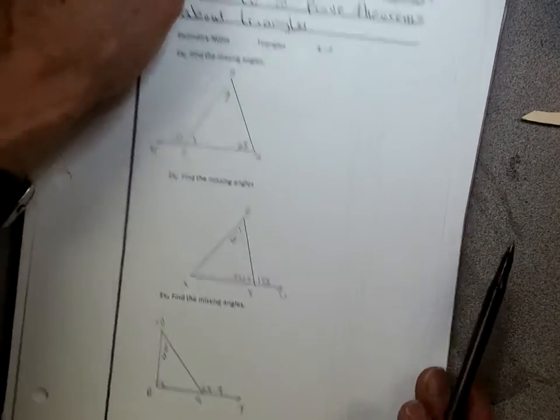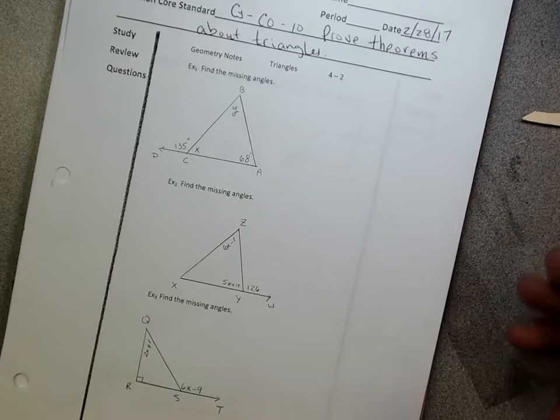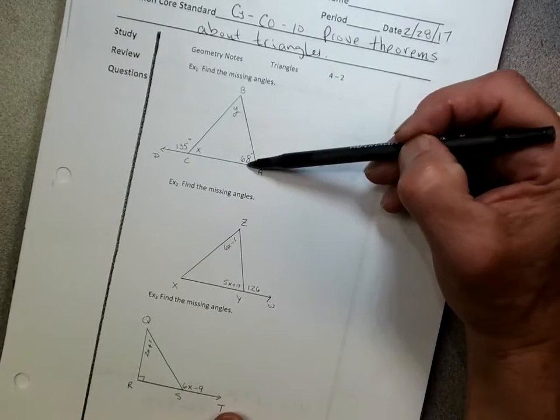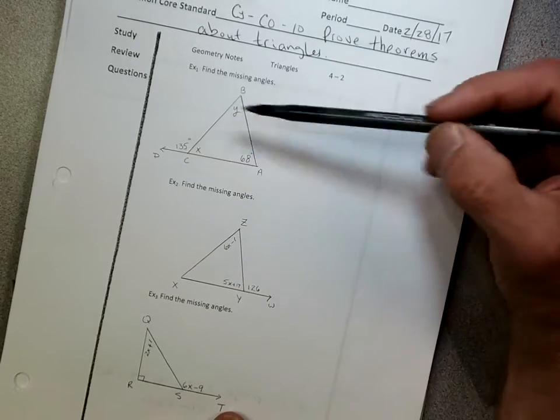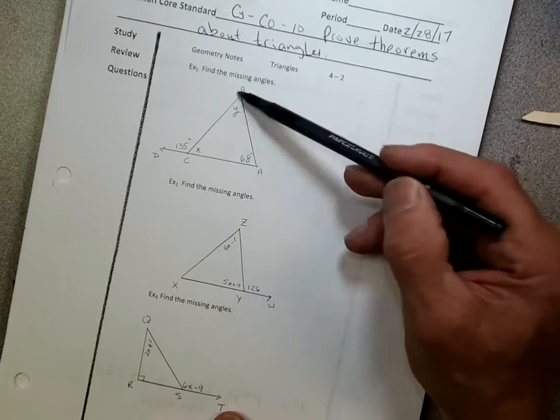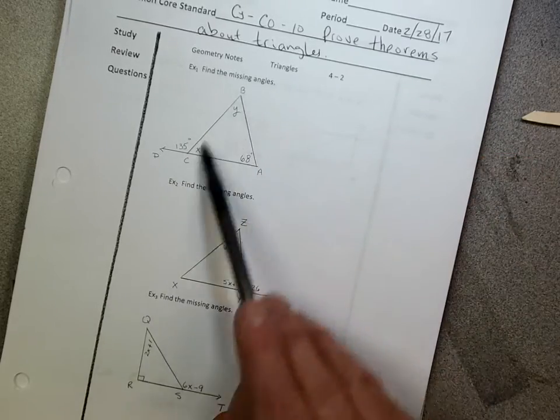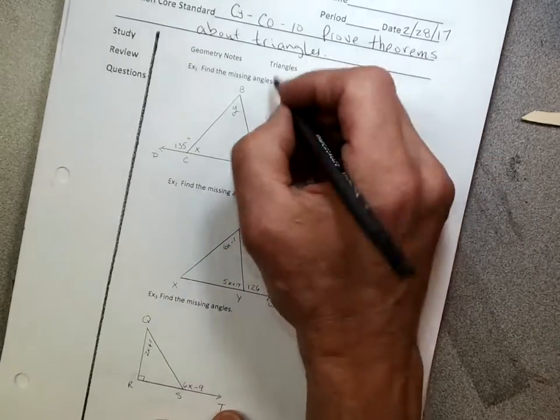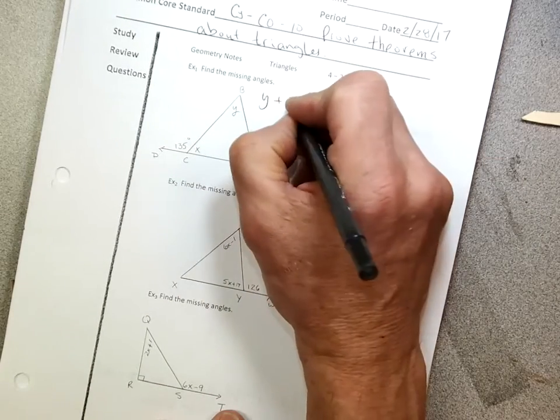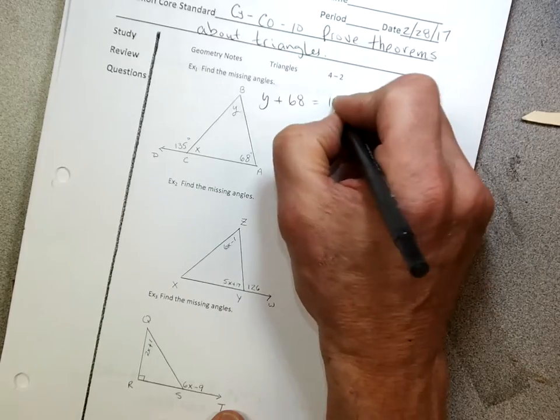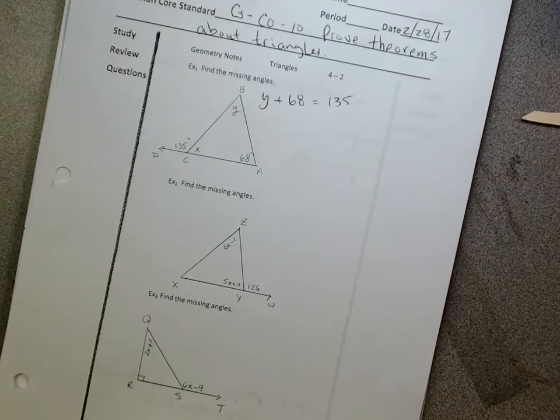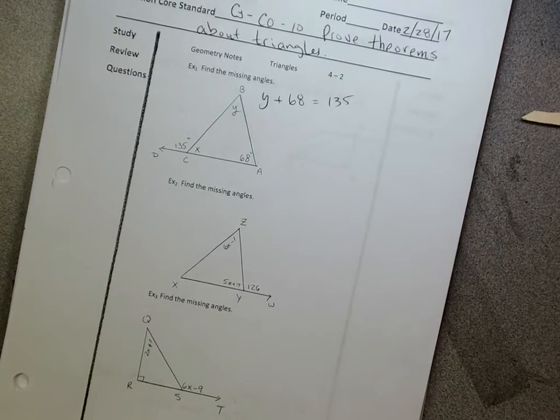So if I take a look at it, first of all, there's a couple of ways to do this, but I actually want to use that formula. I want to say that y plus 68 is equal to 135. So these are my remote interior, y and 68, because they're away from my exterior. So we're going to go, all right, y plus 68 equals 135. I'm actually going to use that formula. And then I'm just going to solve it.